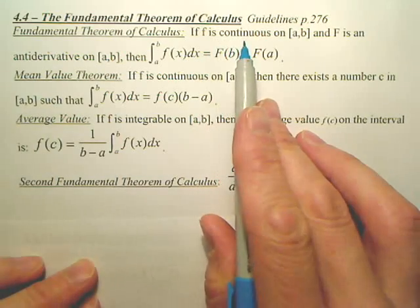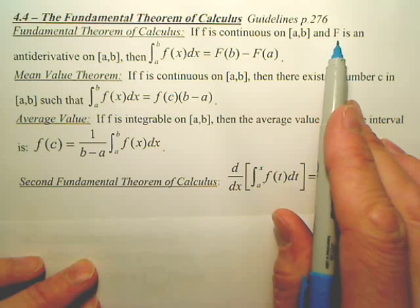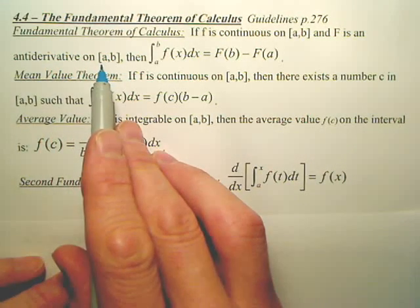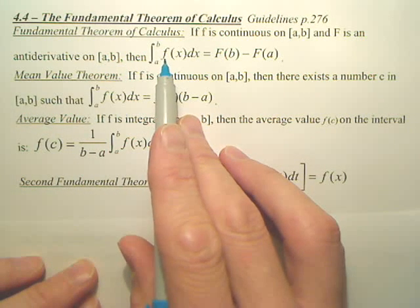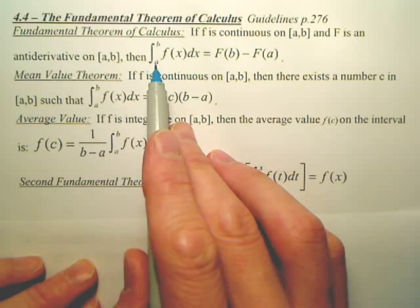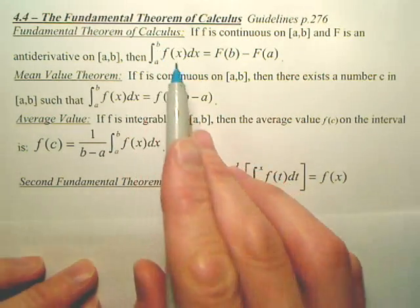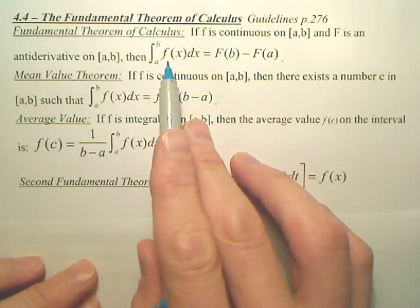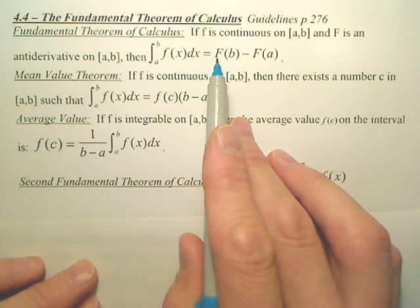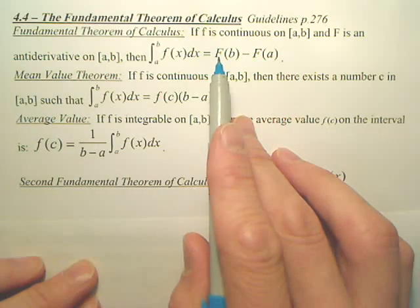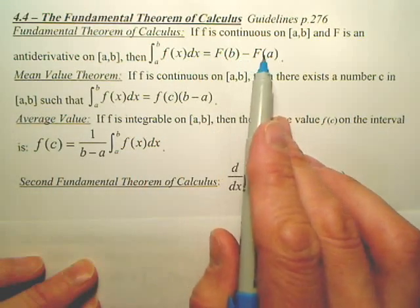If f is continuous, if a function is continuous on the closed interval, and capital F, meaning the integral, is an antiderivative on the interval, then here's how you find the definite integral. A definite integral means you have a number from one point to another. You're going from something to something, a to b. So the area under the curve, basically, capital F means antiderivative or integral of f. So all we do is take the integral of f of x, plug in the b, plug in the a, and subtract the two.